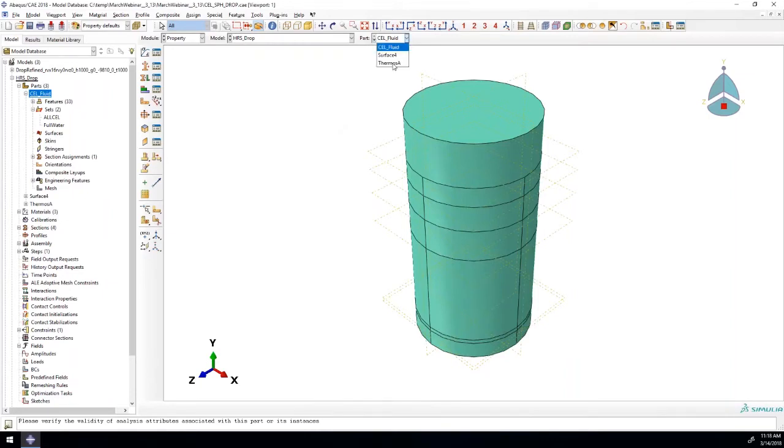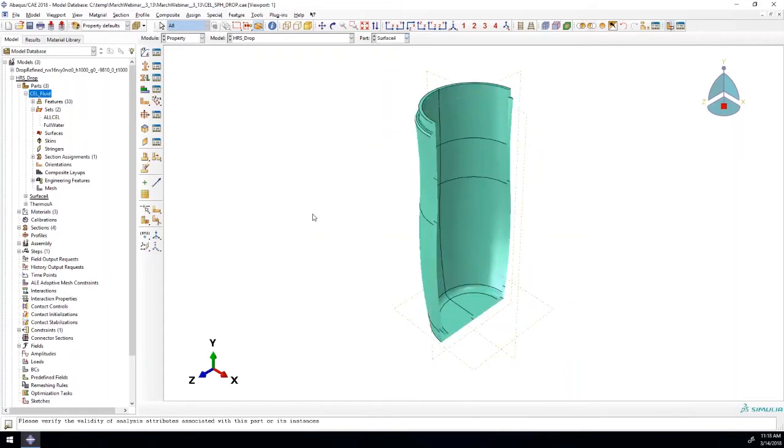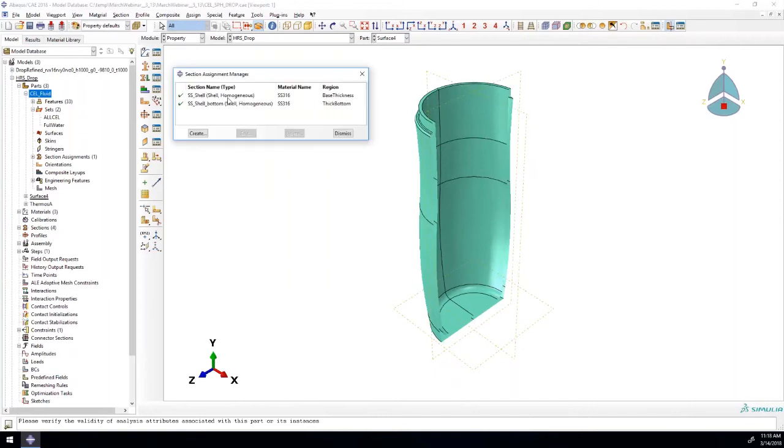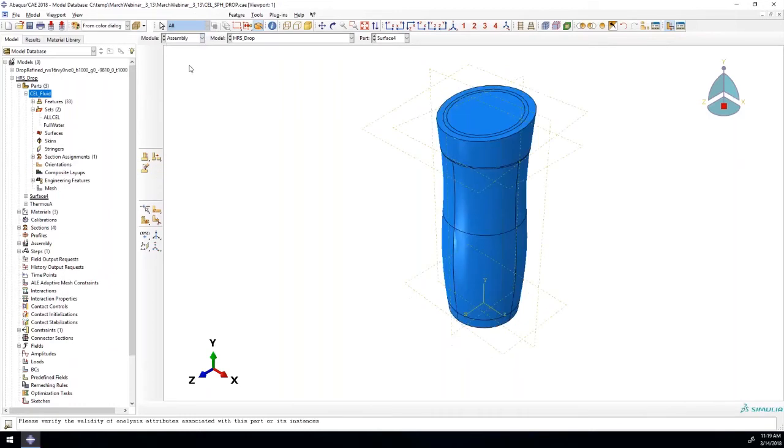We've also got the bottle, which is a vacuum water bottle modeled as shells. If we take a cut section here, we can see that. We've got a few different shell definitions defined there just to capture the larger thickness that's going to be at the bottom of the bottle versus the top, which is how the bottle is actually modeled in real life. So we've got multiple shell thicknesses defined there on the bottle.